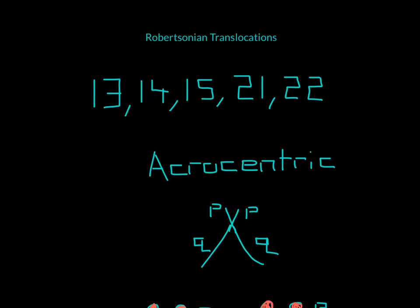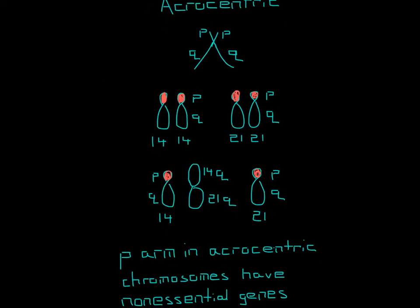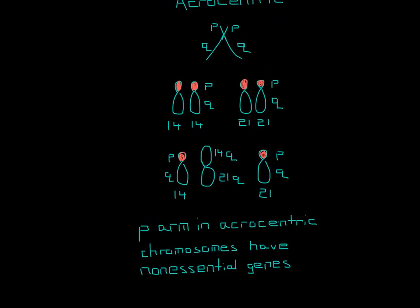So what is an acrocentric chromosome? It's where you have a short p-arm and a very long q-arm. What's important about an acrocentric chromosome is that in the p-arm, you have non-essential genes. This means you can have this Robertsonian translocation without affecting the person, because all you need are the q-arms. You don't need the p-arms to be healthy for acrocentric chromosomes.